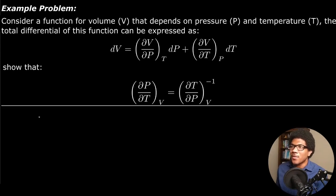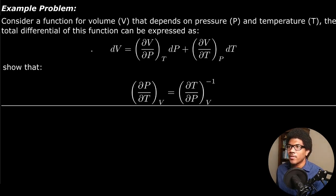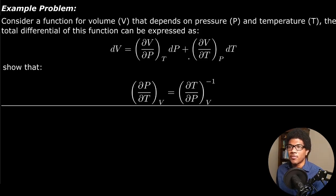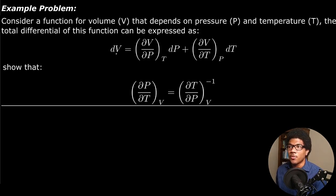This problem says: consider a function for volume V that depends on pressure and temperature. The total differential of this function can be expressed as the following. Since it's a function of pressure and temperature, you have to take the partial derivative with respect to each of those variables and sum up their respective contributions to the total differential.